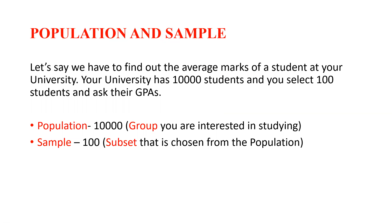Now let us try to understand population and sample. Let's say we have to find out the average marks of a student at your university. Your university has 10,000 students and you select 100 students and ask their GPAs. In this case, the population is 10,000 — that is the group you are interested in studying — and the sample is 100, a subset chosen from the population.